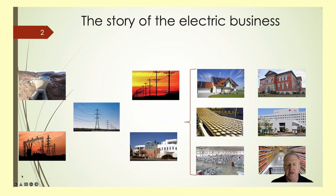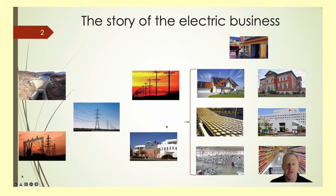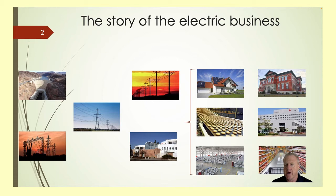Then you get to what we call a distribution utility. The distribution utility steps the voltage down and then distributes it to end users — your homes, schools, hospitals, donut factories, manufacturers, retail establishments. You drop that voltage down to 120 volts and use what we call services to get the electricity to the end user. From start to finish there's an accounting process in place — expenses, fixed assets, billings to customers — it's all pretty integral, like any other manufacturing process, because you manufacture electricity and you deliver electricity.